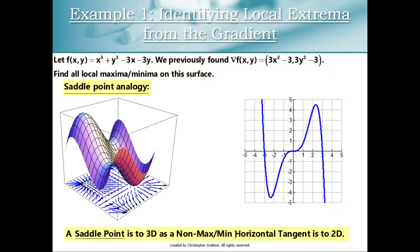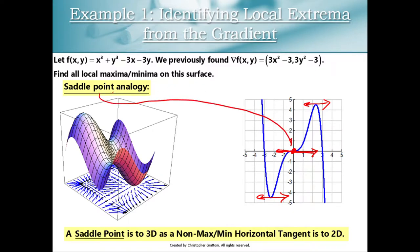There is an analogy to a saddle point from single variable calculus — a curve that has a point with a horizontal tangent line that is neither a maximum nor a minimum. You didn't call it a saddle point in Calc BC, but it is a saddle point. So a saddle point is a place where you have a horizontal tangent plane, but it's neither a max nor a min.